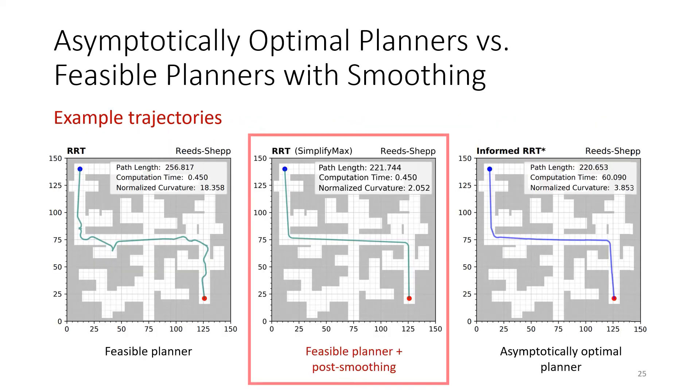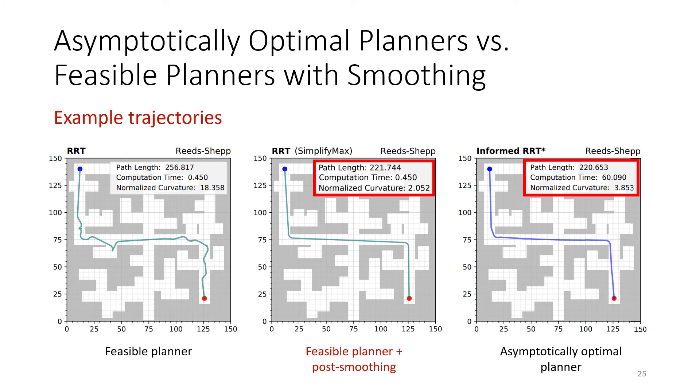The comparison is performed using the Reeds-Shepp extend function. In these figures, we can see that feasible motion planning with post-smoothing can indeed outperform asymptotically near-optimal motion planning algorithms in both planning efficiency and the resulting path quality. For example, RRT using the post-smoothing algorithm SimplifyMax, shown in the center, achieves a smaller path length and about the same normalized curvature after less than one second, while informed RRT star, shown on the right, finds a solution after 60 seconds.